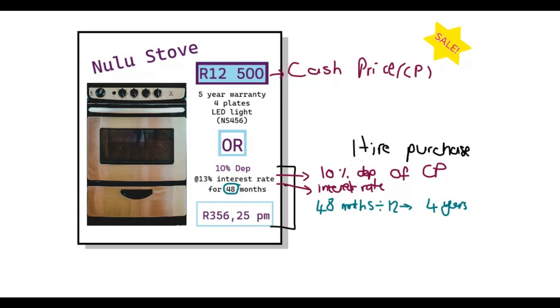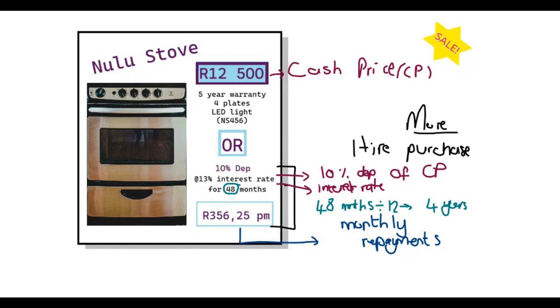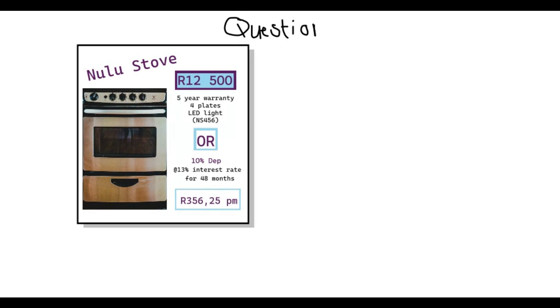Your monthly payment is three hundred and fifty-six rand, so every month you have to pay a smaller amount back as part of that loan. You can either pay with cash or use the hire purchase option, in which case you will actually be paying more because of interest. This uses simple interest — if ever they ask you to work it out, you will use the simple interest formula unless they specify compound interest.